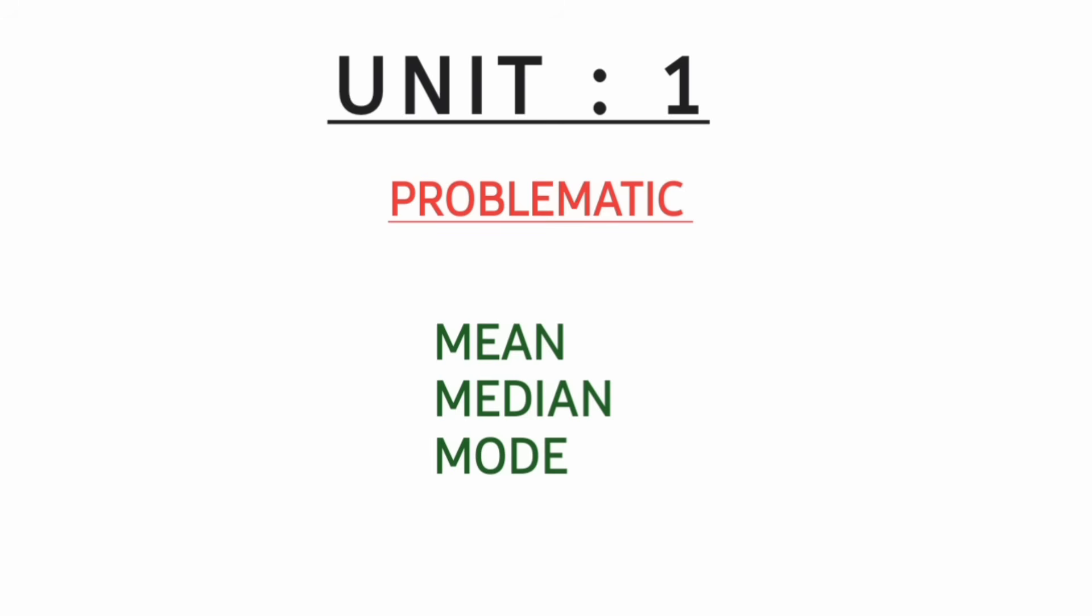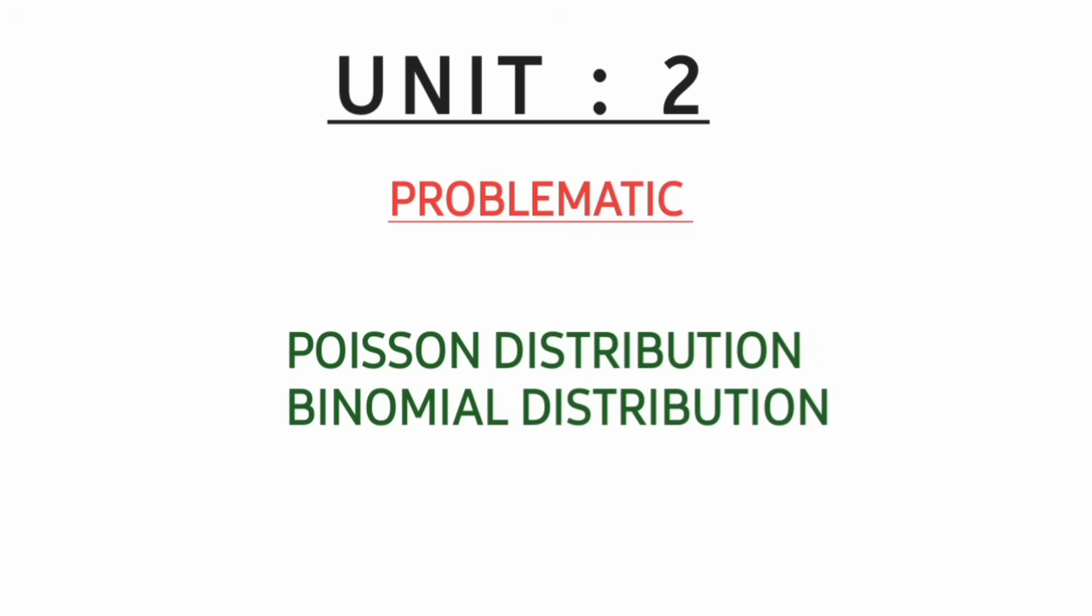In Unit 2, only two problematic things you are having: Poisson distribution and binomial distribution probability. Especially Poisson distribution - this year you may have chances to get Poisson distribution problematic question for long.